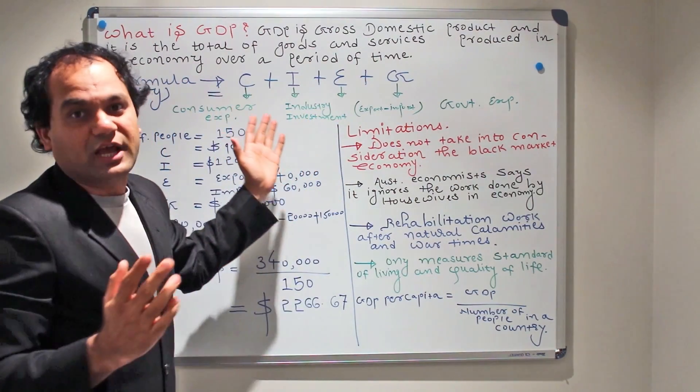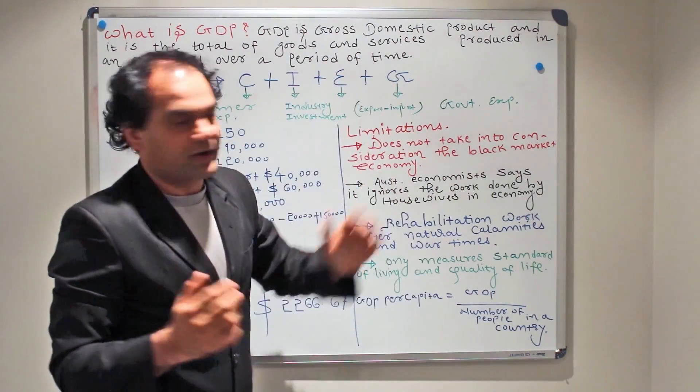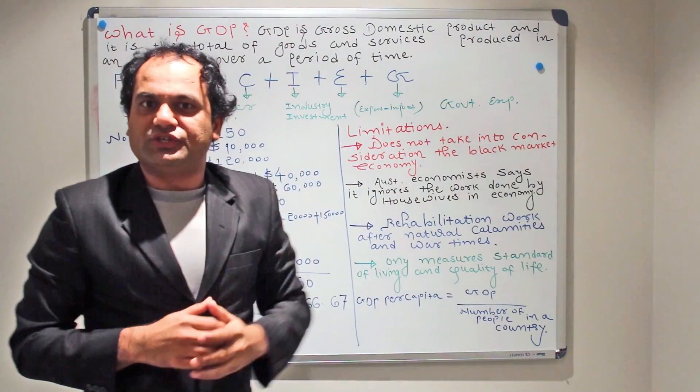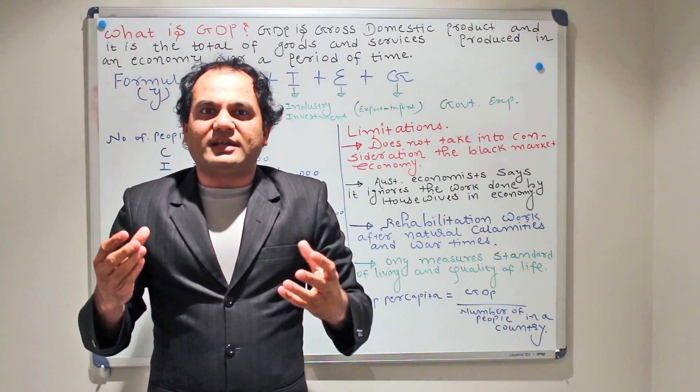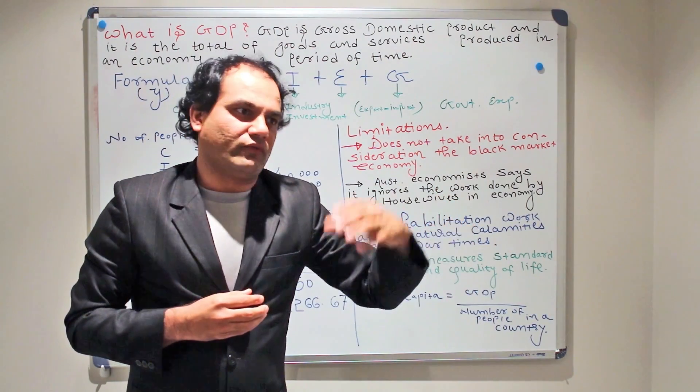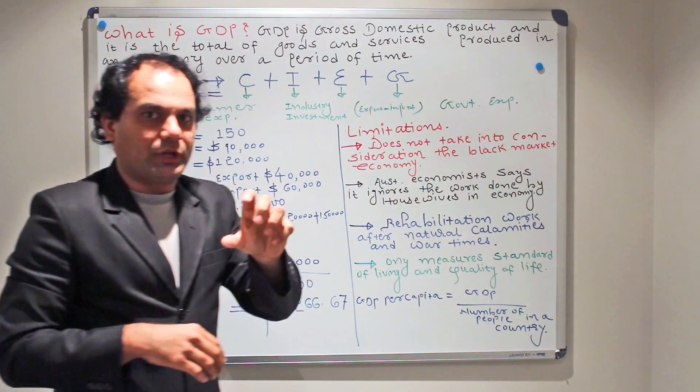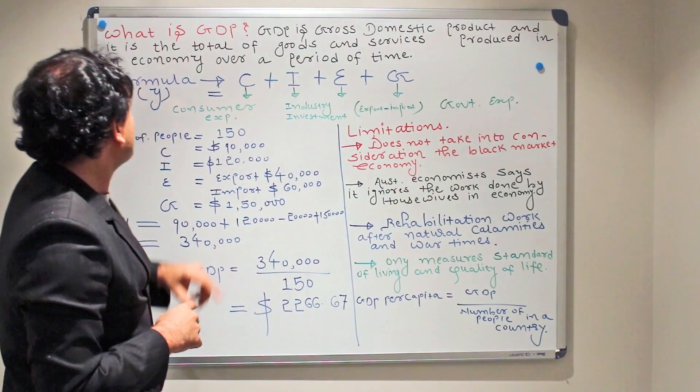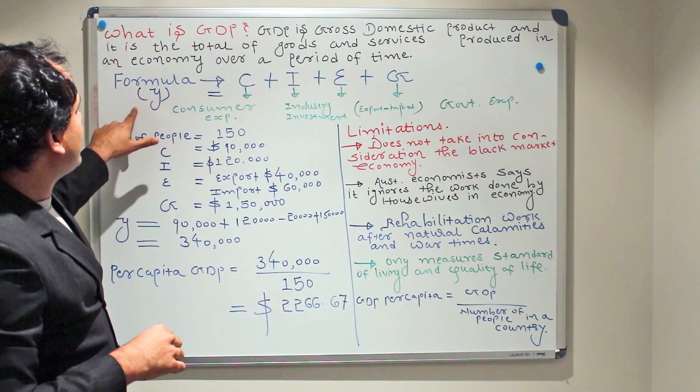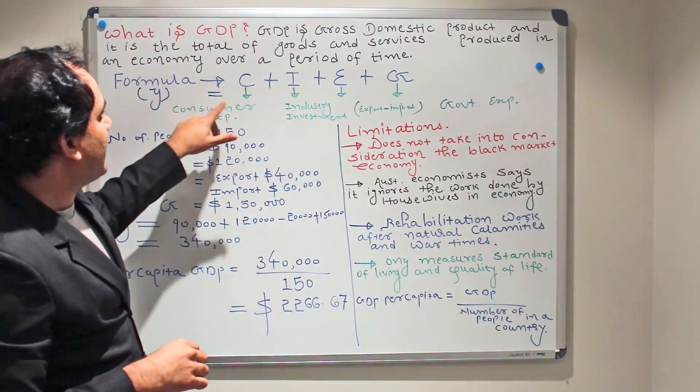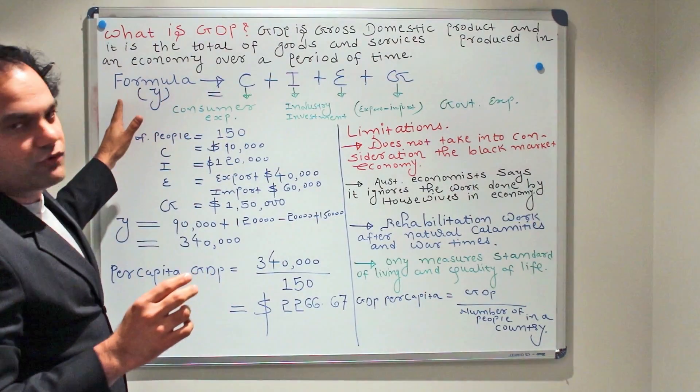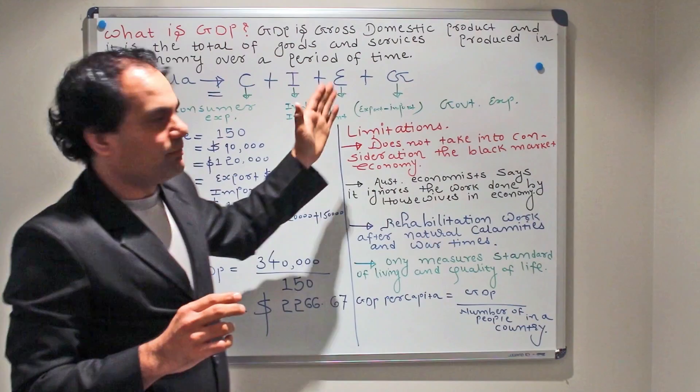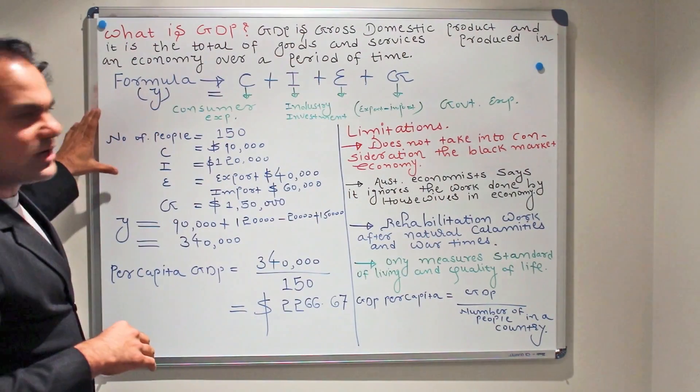Then comes G, and G stands for government expenditure. Government spends a certain amount of money in an economy on various developmental projects. That particular amount is recorded here in G, government expenditure. So again, when you want to calculate GDP, this is the formula: Y = C + I + E + G.